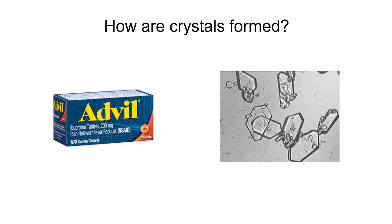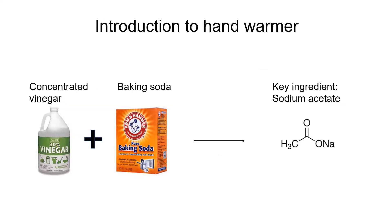Do you know how crystals are formed? In this video, we are going to use a hand warmer to demonstrate how crystals are formed through nucleation and growth. This hand warmer uses crystallization to release heat. The key ingredient is sodium acetate, which can be obtained by mixing vinegar with baking soda.